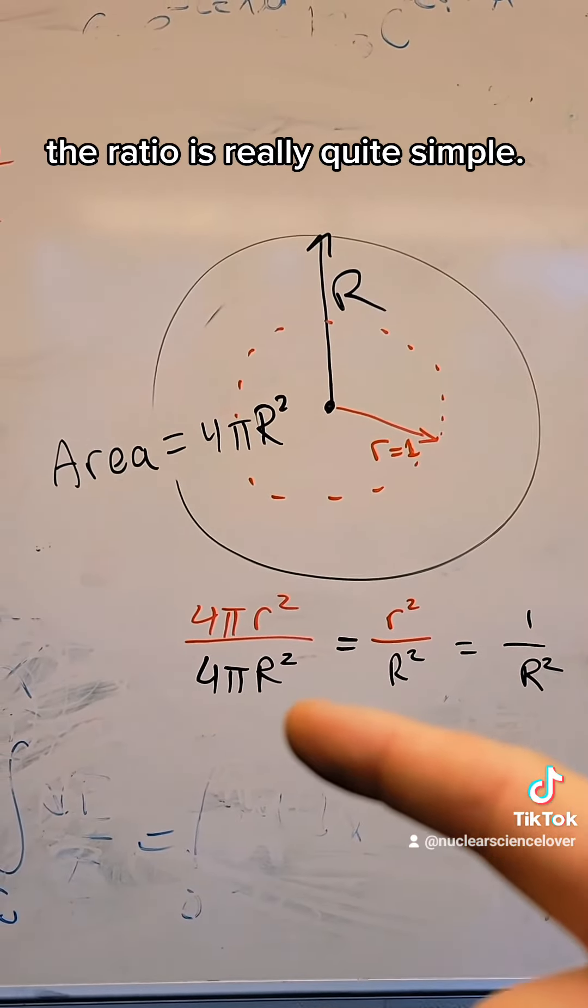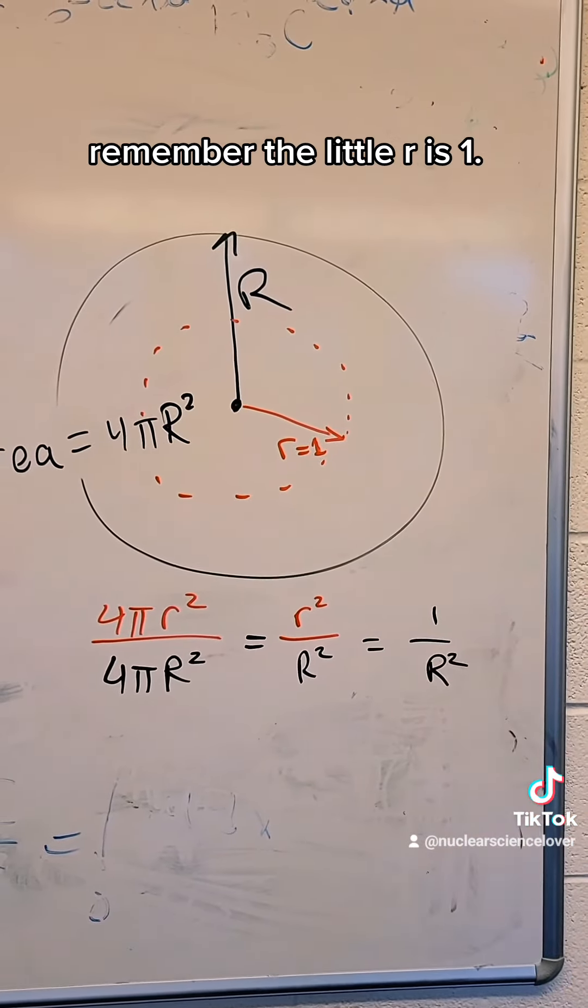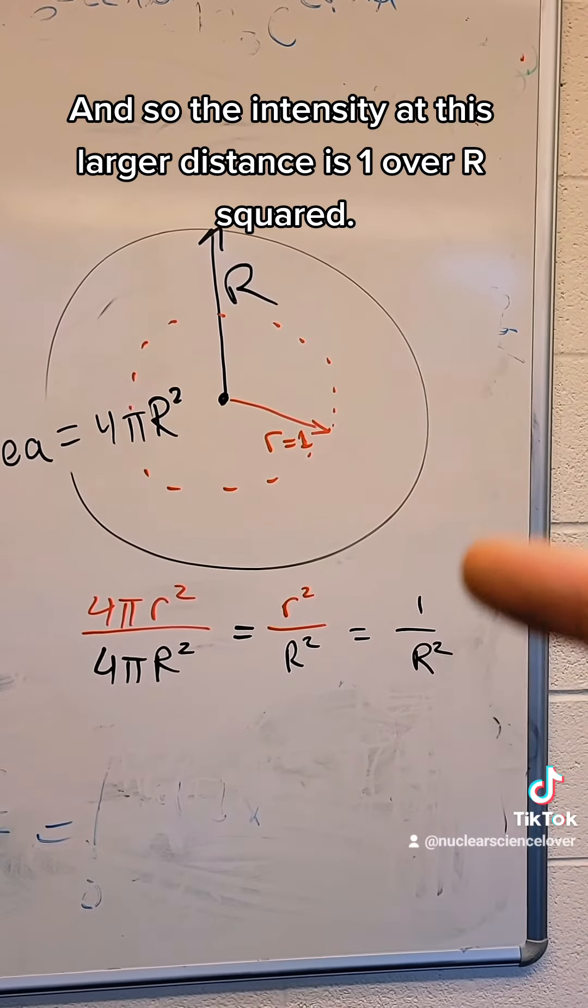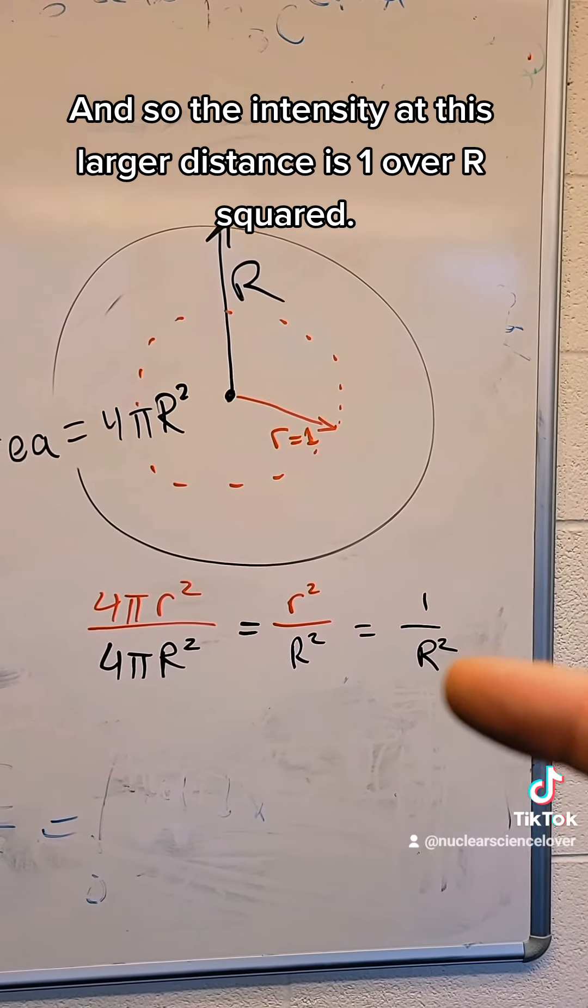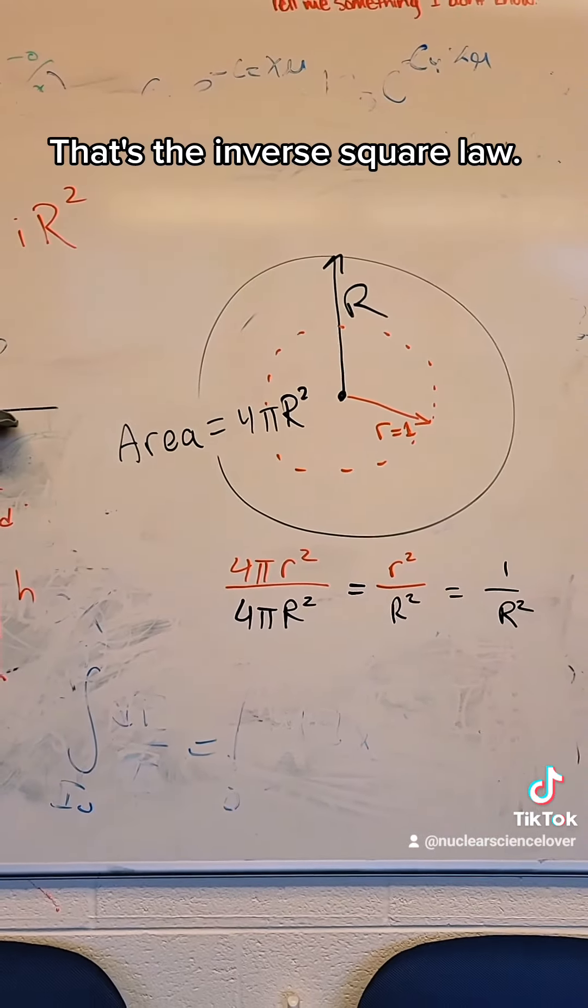So when you look at the math, the ratio is really quite simple. The 4π's cancel. When you look at these ratios right here, remember the little r is 1. And so the intensity at this larger distance is 1 over R². So the intensity comes off as 1 over R² as you go out some distance. That's the inverse square law.